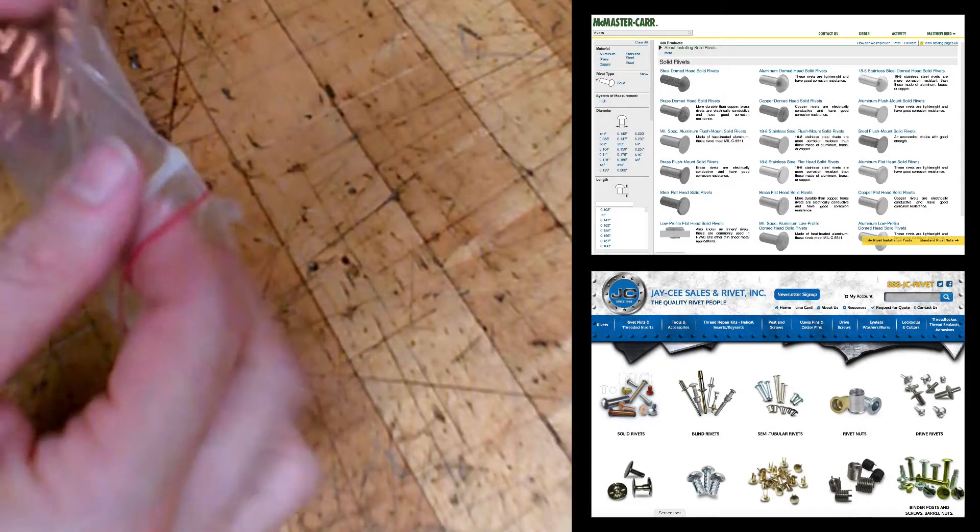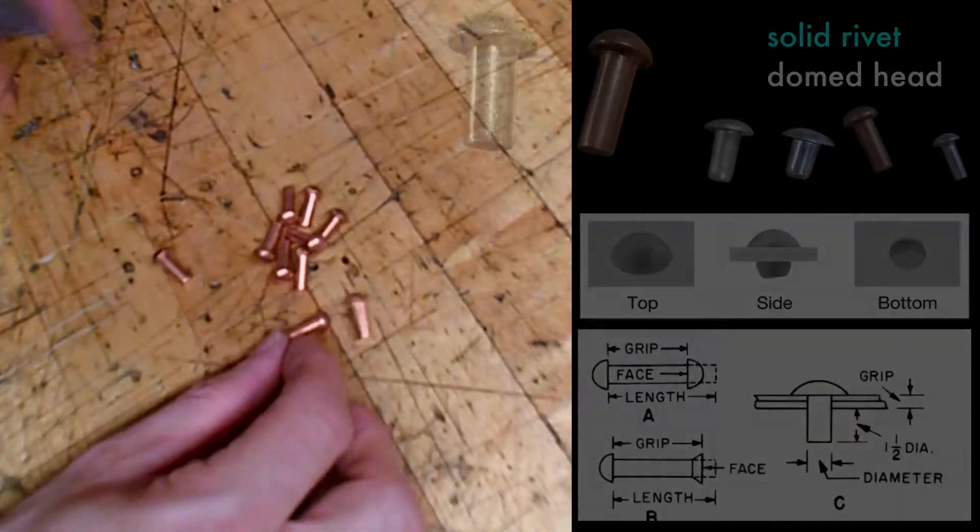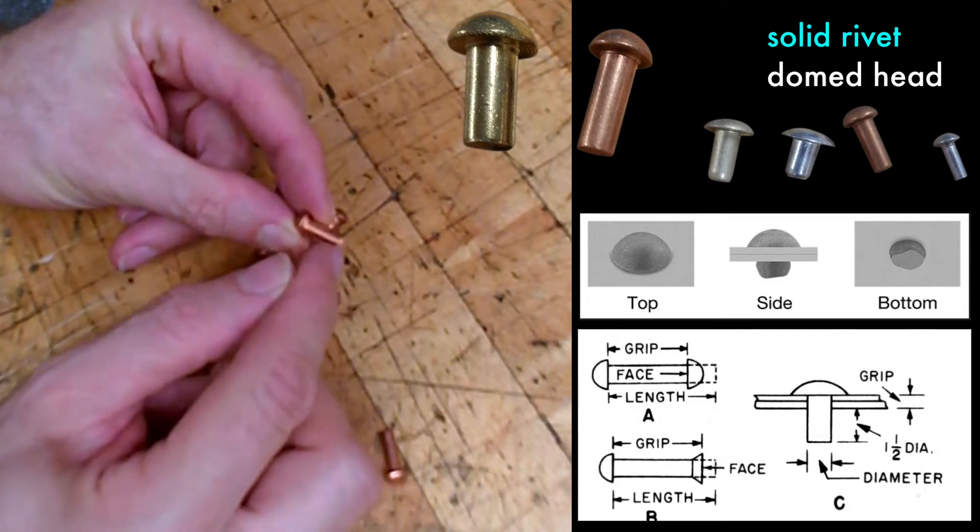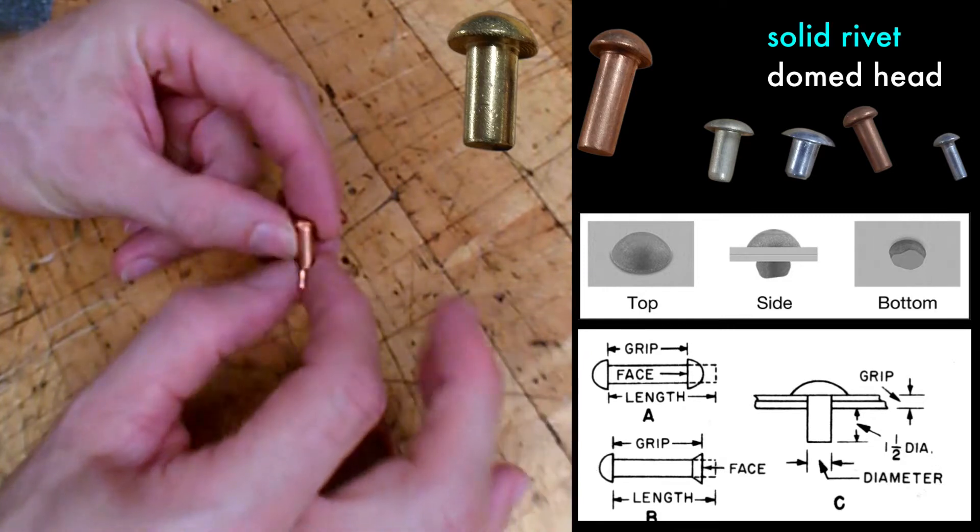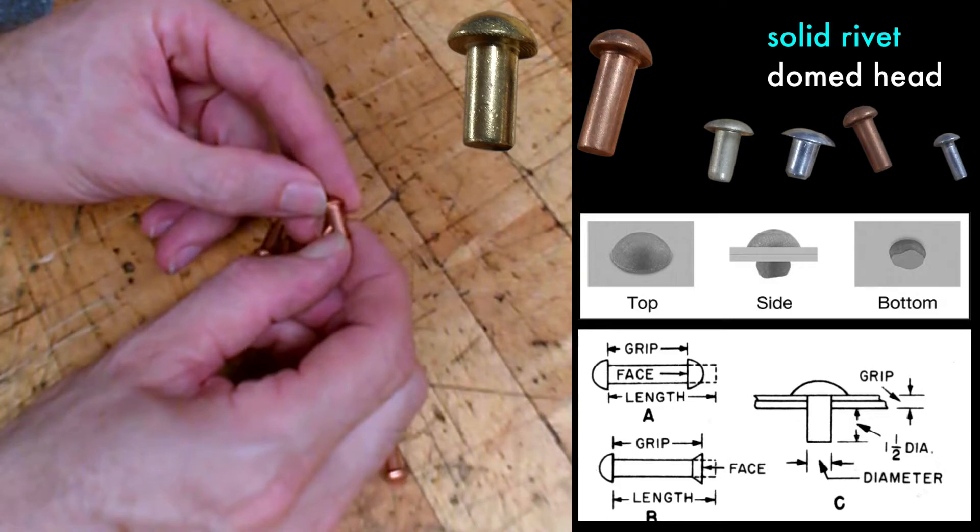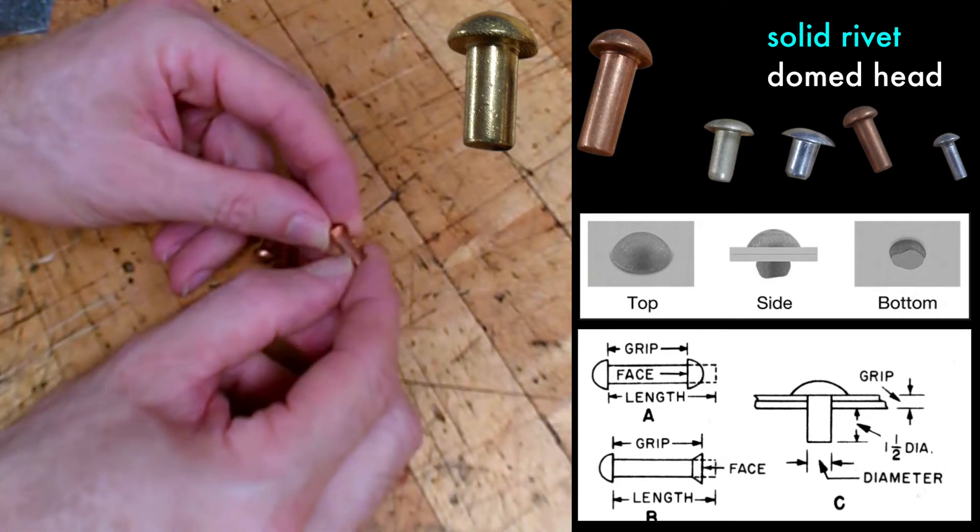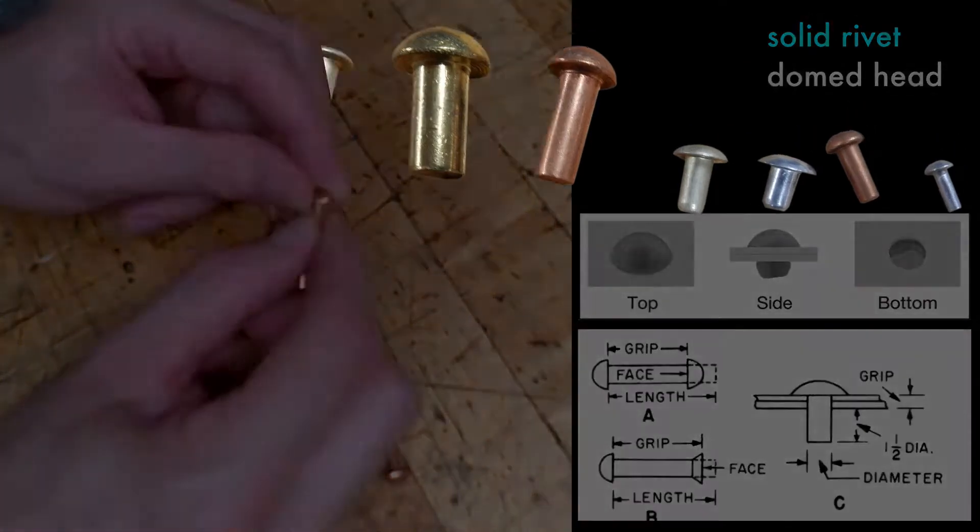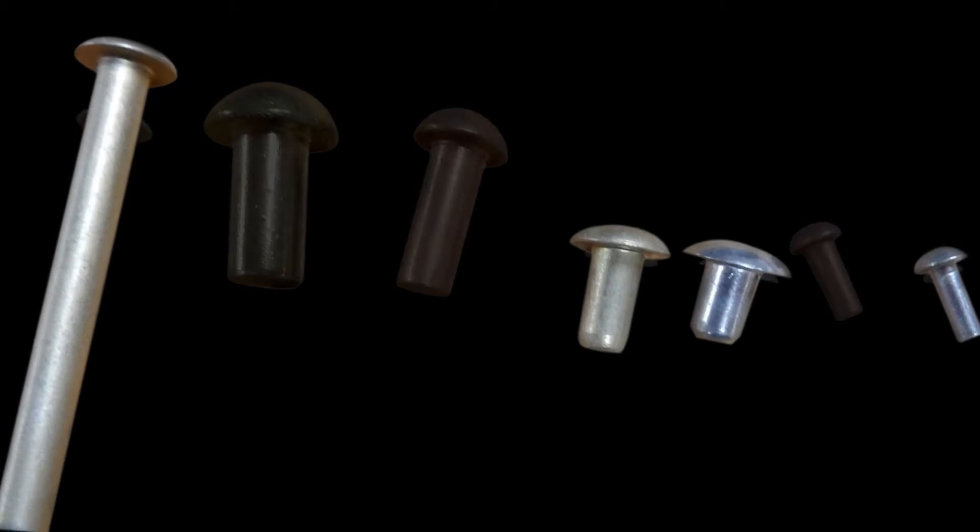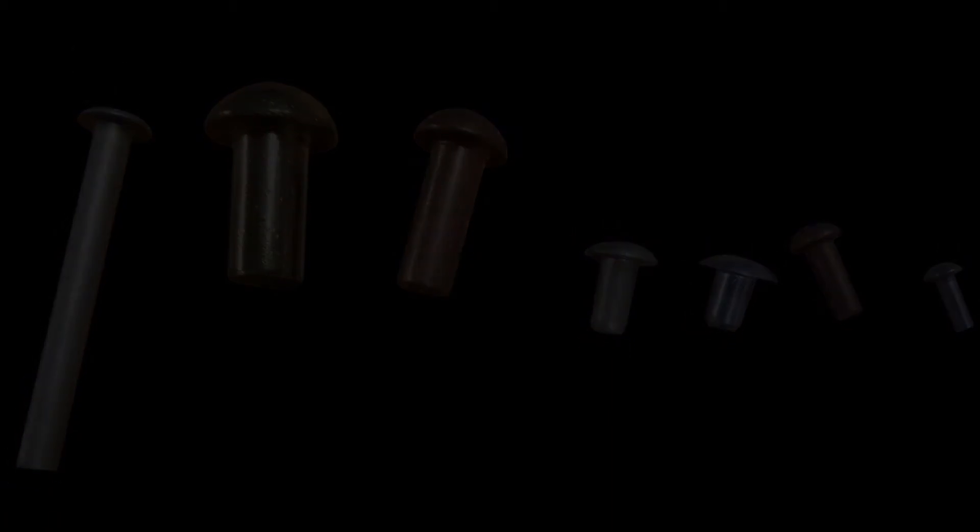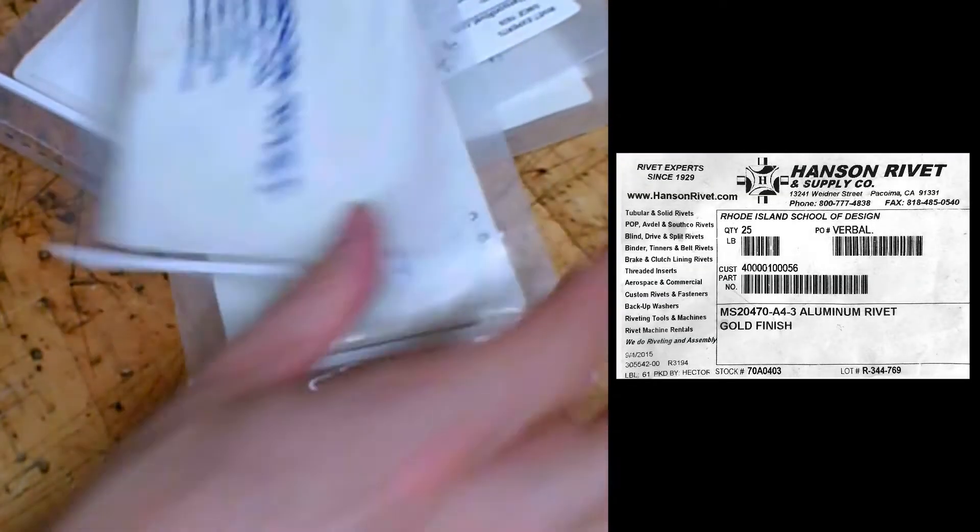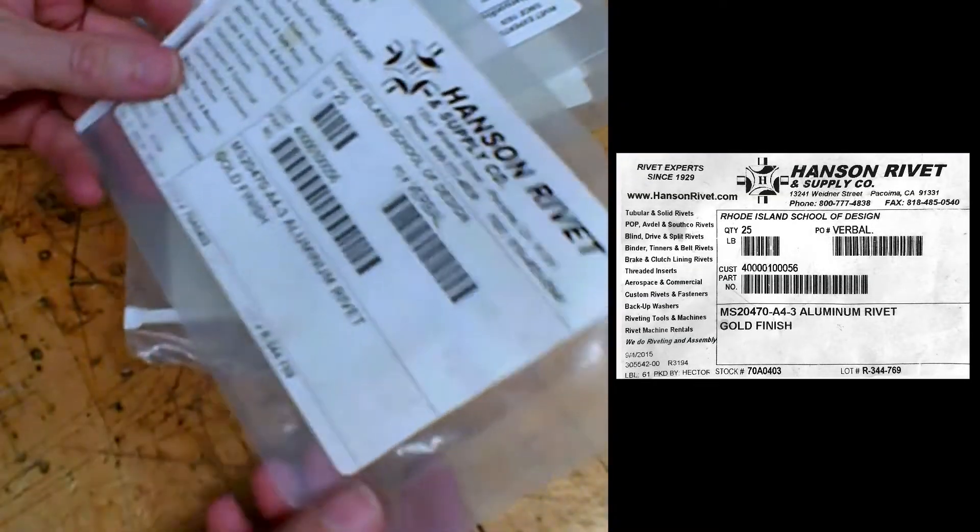You can buy rivets. You can buy pre-made rivets. Here are some copper ones. They have a domed head, flat shoulder, and a shaft. You can get them in all different lengths. It should go through your metal and have enough to dome over on the other side. So this is for very thick metal, but you can also cut it shorter with a jeweler's saw if you wanted to put this through some thinner metal. You can buy them in all different metals. These are copper. You can buy them in brass, you can buy them in aluminum.